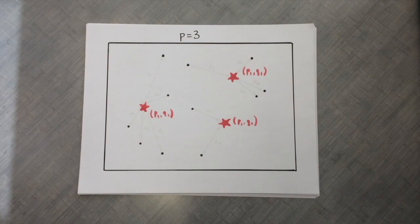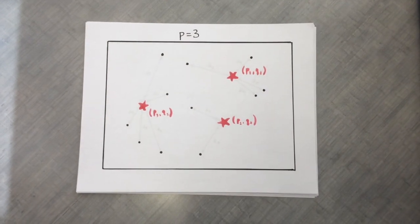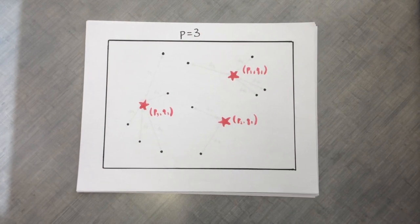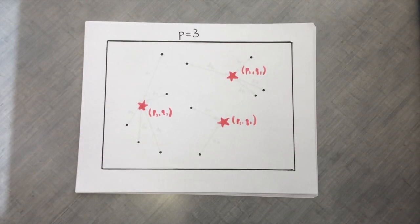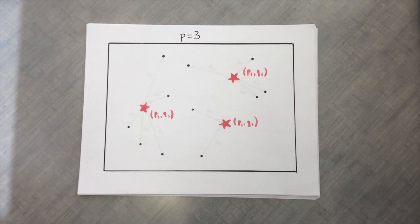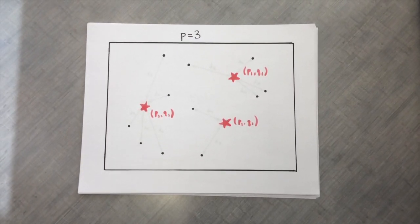We are also given a number p. We wish to find p points called centers so that the worst distance from a demand point to its closest center is minimized. These center points can be part of the original demand point set or be entirely new coordinates, as seen here in this example.